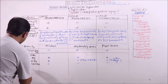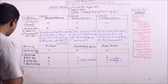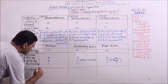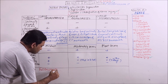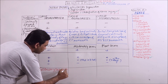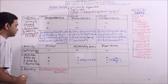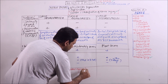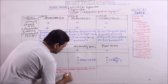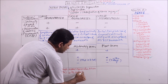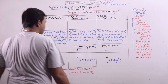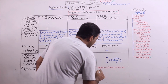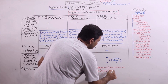Regarding recovery, in neuropraxia full recovery is possible and will occur within a few days to a few weeks. In axonotmesis, axonal regeneration will occur so no surgical treatment is required. However, in neurotmesis, repair will not occur spontaneously so surgical treatment will be required.